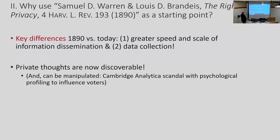Key differences when we think about 1890 versus today: we have greater speed and scale of information dissemination. It's like newspapers, just a lot faster and there's a lot more of it. But also data collection — that's really a key difference.